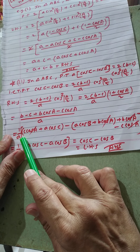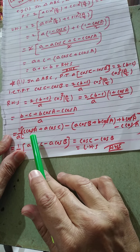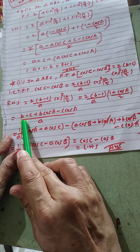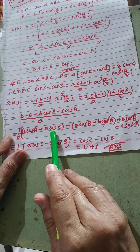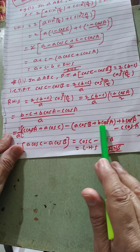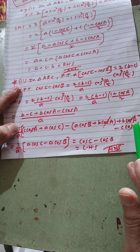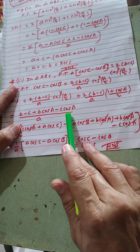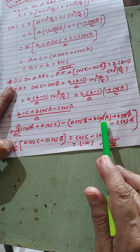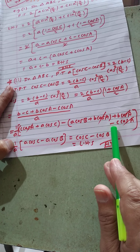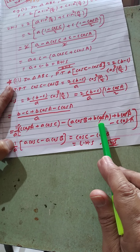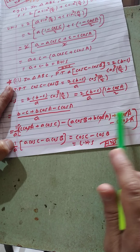Writing 1/a outside, we replace b using the projection formula: b = c cos A + a cos C. Substituting, we get c cos A + a cos C + a cos C minus c cos A minus c cos A. The c cos A terms cancel, and the b cos A and minus b cos A terms cancel.